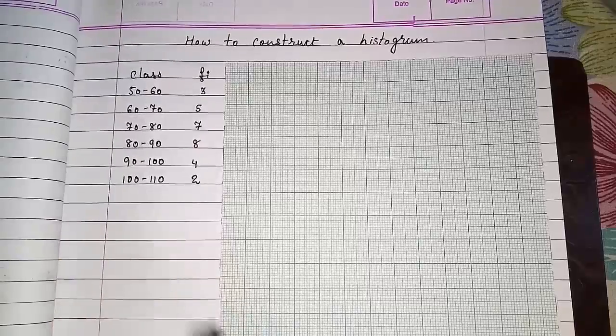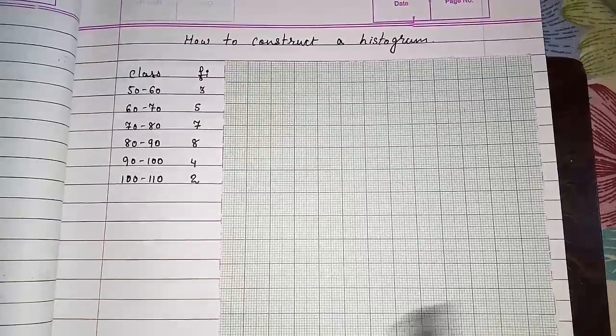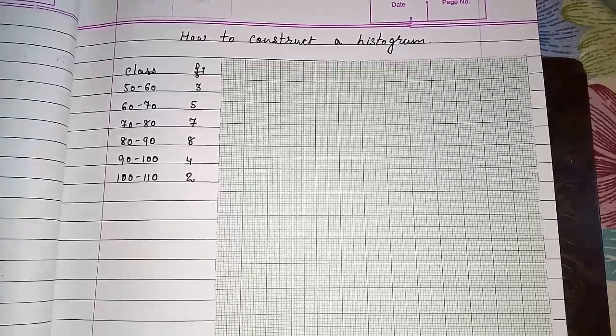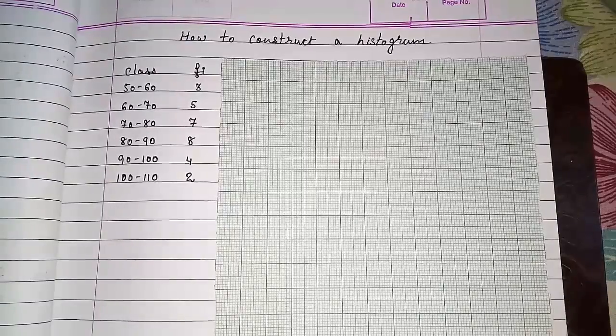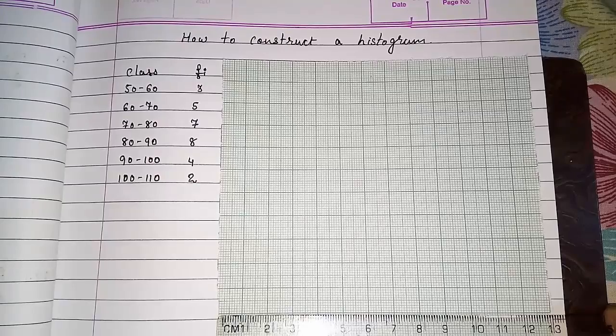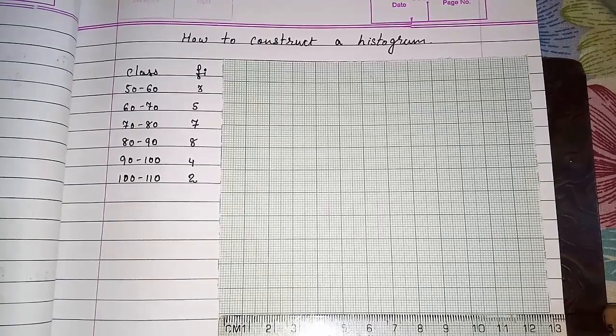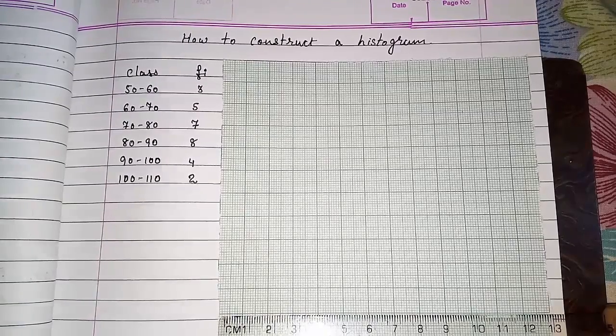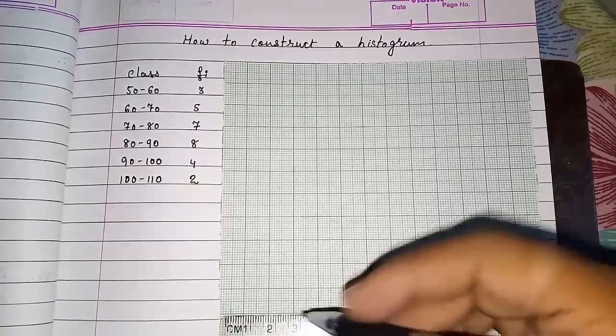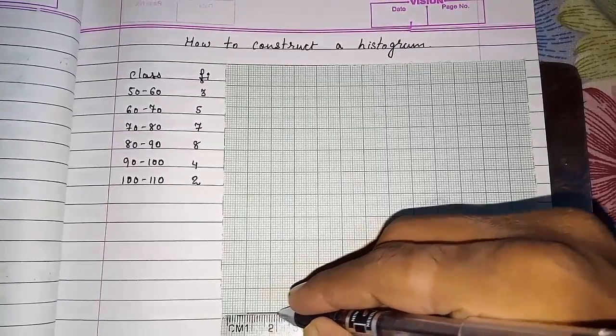Then class is always on the x-axis. I am drawing with the help of pen, but you have to use pencil only every time. Here I am using pen because if I draw with pencil it is a little bit lighter and you will not be able to see. So I am drawing this graph with the help of pen, but you have to use pencil only. Keep this in mind.